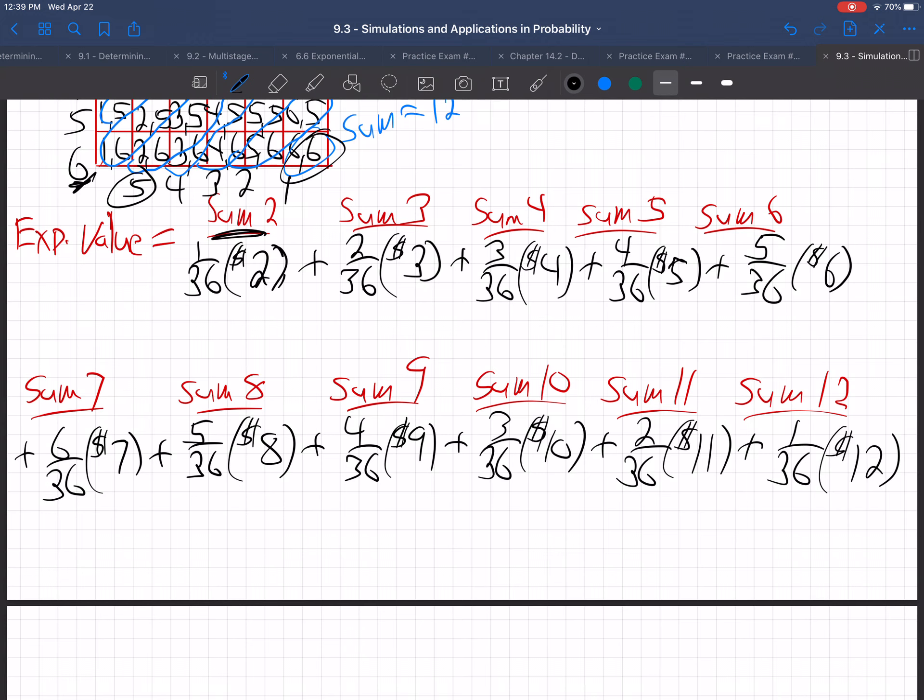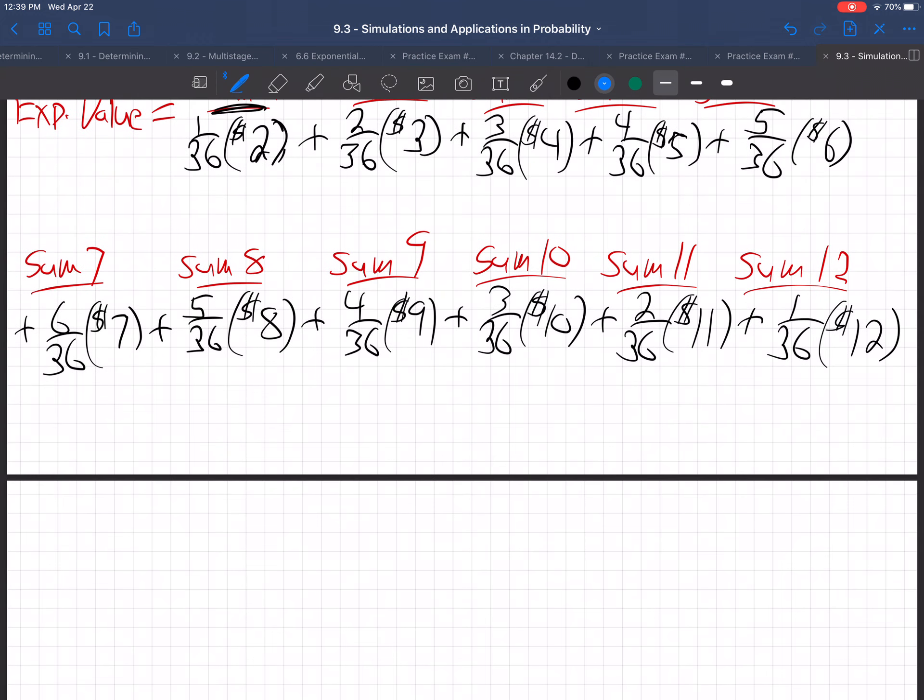Does that make sense? I'm going to take, starting here, 1 divided by 36 times $2 plus 2 divided by 36 times $3 plus, etc. Just keep on going. If you want to save time, 36 is the denominator for all of them. You could just multiply all the other numbers. I got exactly $7.